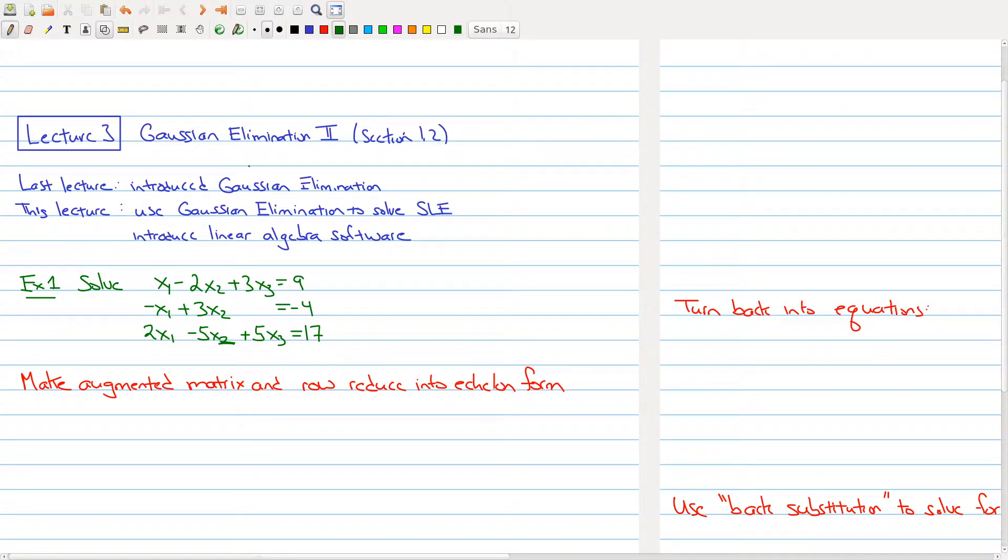So moving on, let's look at example one here where we have a system of linear equations. We have three equations: x1 minus 2x2 plus 3x3 equals 9. So we have three equations with three unknowns, and what we would like to do is solve the system of linear equations. Let me just give you a quick rundown of how you would do this. The first stage is to make the augmented matrix. Remember, all the key points here are the coefficients and what things are equal to. So let me make my augmented matrix.